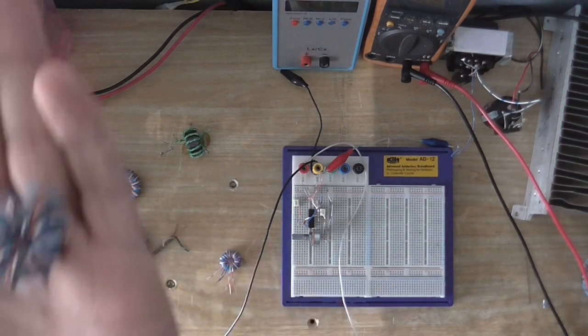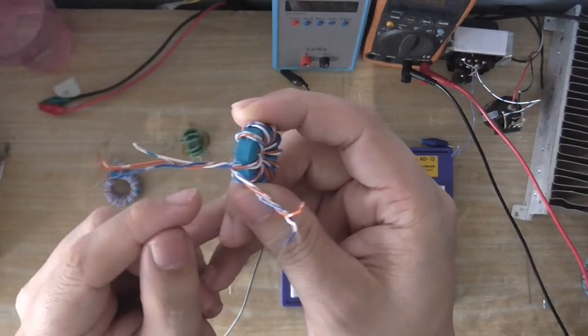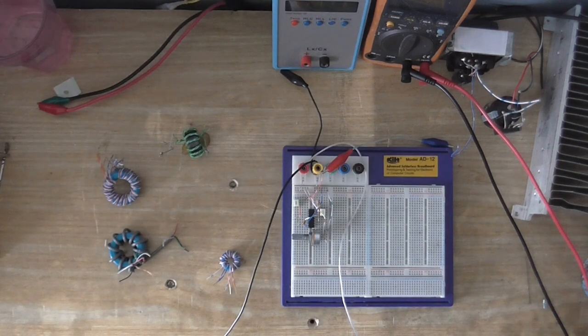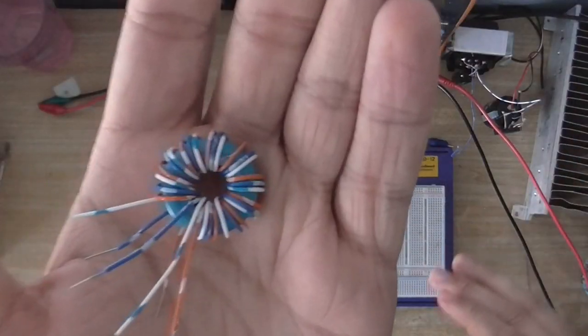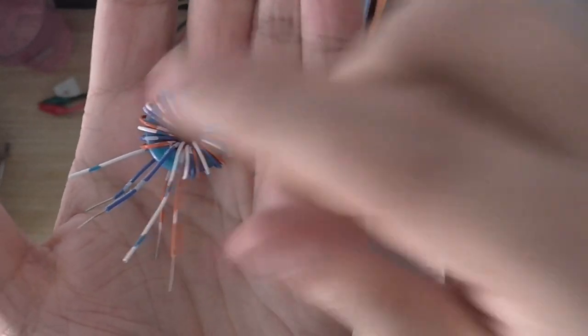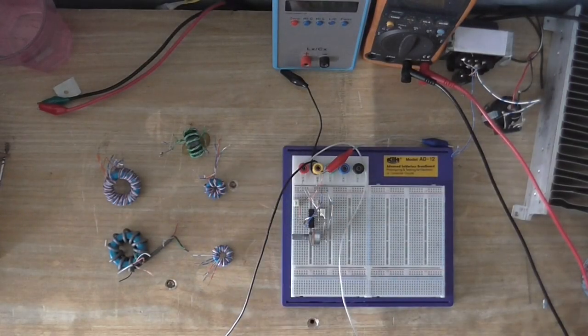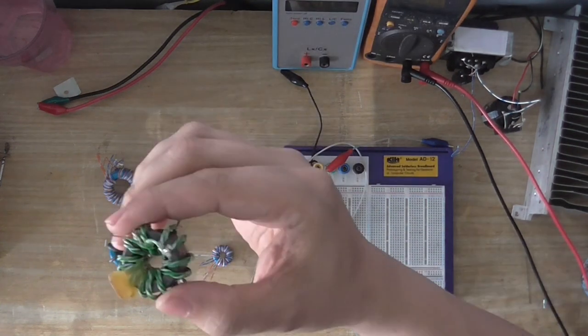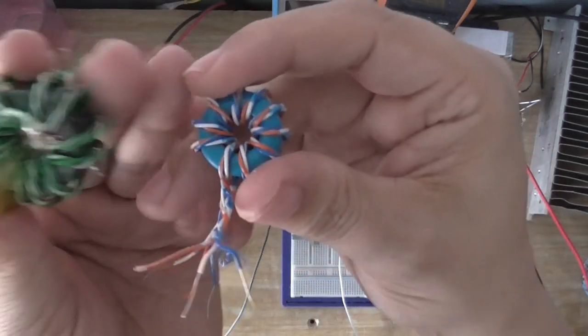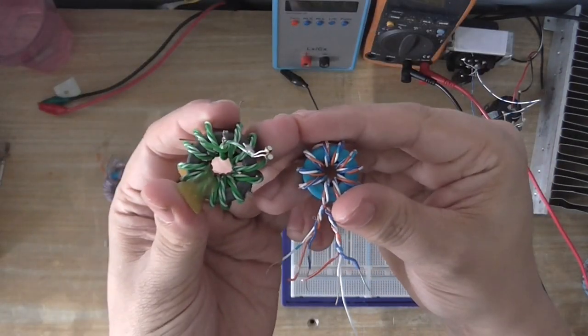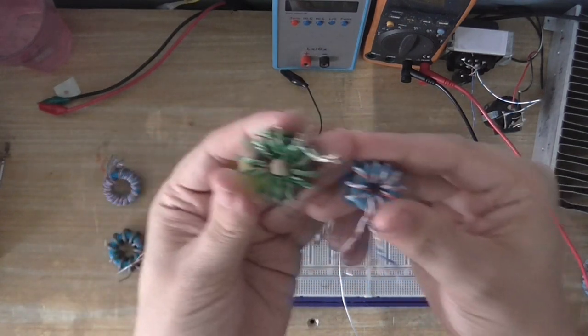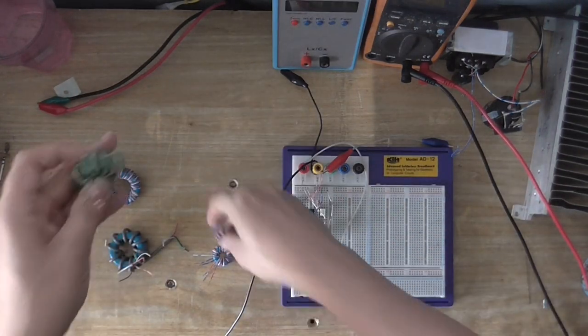This one has been wound in the traditional way, by twisting the wires around each other and then winding them around the core. This one has been done in an interleaved way. So we'll see how well that works. It looks like there's more turns on this one, but there isn't. These are both ten-turn cores. It just looks like there's more on this one because of how it's wound.